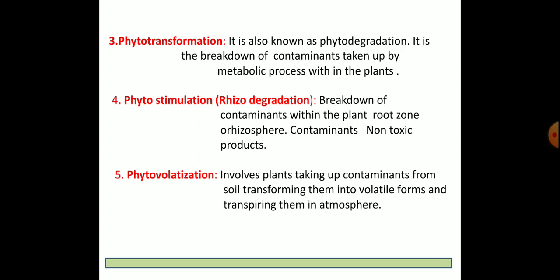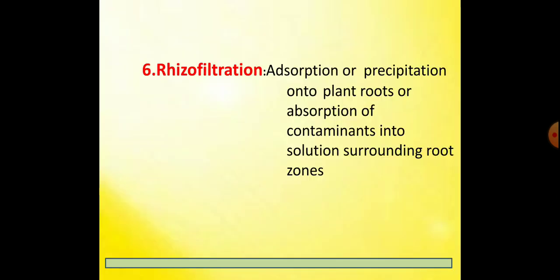The fifth category is phytovolatilization. In this category, the plant absorbs contaminants from the soil, transforming them into volatile forms, and those volatile forms of contaminants are then transferred into the atmosphere through the transpiration process.